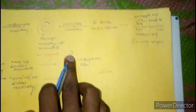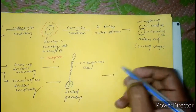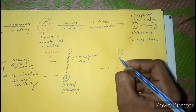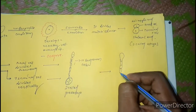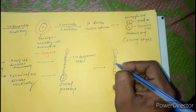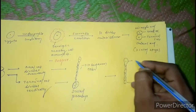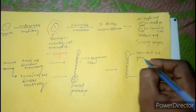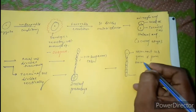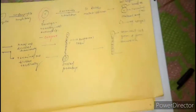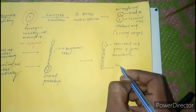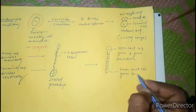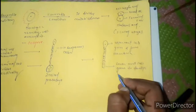Next to it, the uppermost cell of the suspensor grows and forms the hysteria. The lowermost cell of the suspensor develops to form the hypophysis.